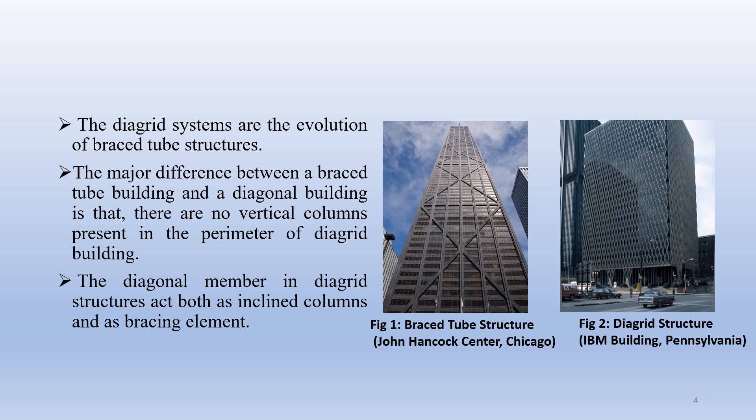In this slide we see two figures. Figure 1 shows the Braced Tube Structure — the John Hancock Center located in Chicago — while Figure 2 shows the Diagrid Structure, known as the Hearst Building. The major difference between both buildings is that in the Braced Tube building, vertical columns are present in the perimeter, while in the Diagrid building, there are no vertical columns present in the perimeter. The diagonal members in a Diagrid Structure act both as inclined columns and as bracing elements.